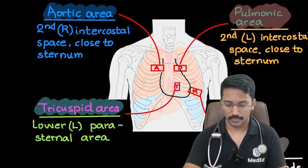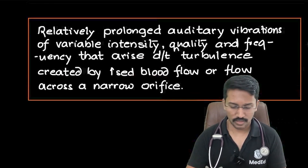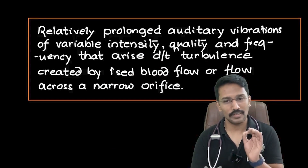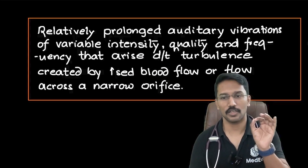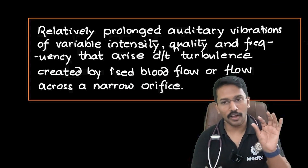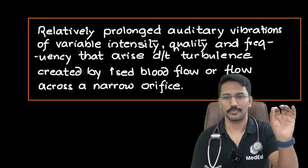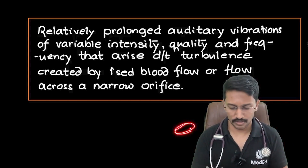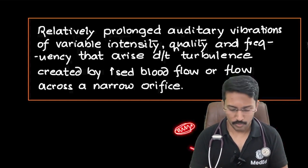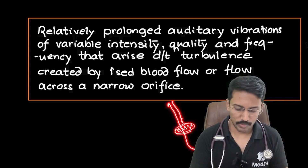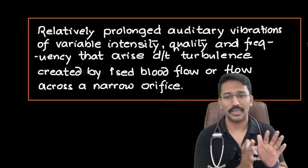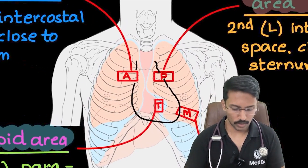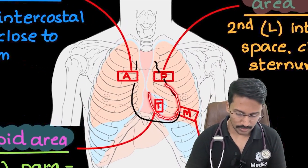How do we define murmurs? We define murmurs as the turbulence created by the flow of blood. The sound generated by this turbulence will be propagated along the direction of the flow of blood. So if at a particular location I create turbulence and the blood is moving in a certain direction, the sound will be carried in that direction itself.